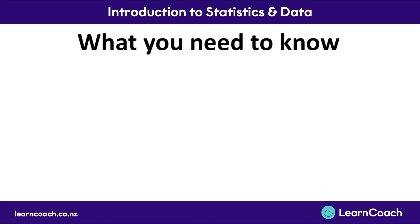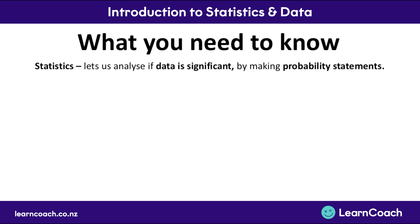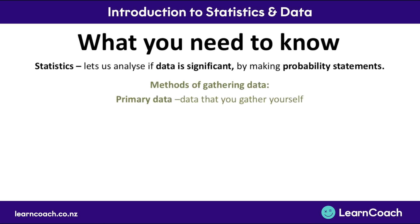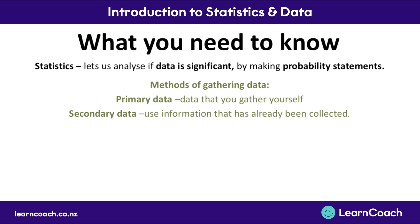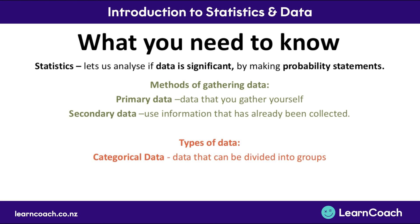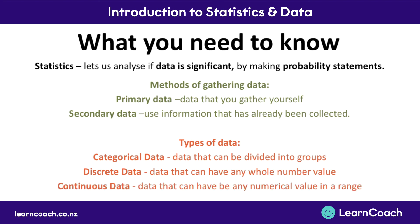In summary: statistics lets us analyse if data is significant, and it does this through probability statements about how likely results are due to chance. We covered methods of gathering data — primary data, which is data you've gathered yourself, and secondary data, which is using information already collected. We also covered the three types of data: categorical data, which can be divided into groups; discrete data, which can have any whole number value; and continuous data, which can have any numerical value in a range. That concludes the introduction to statistics and data.